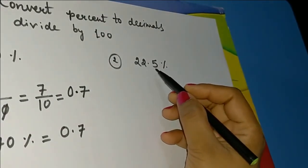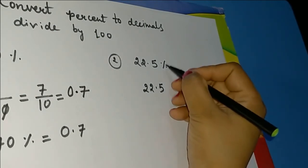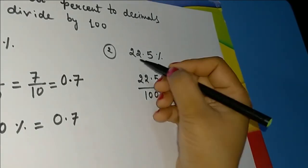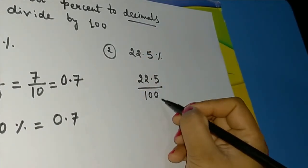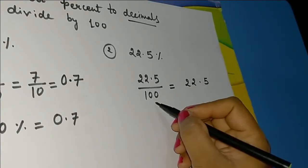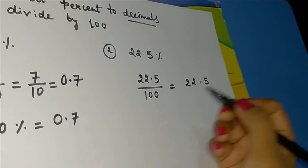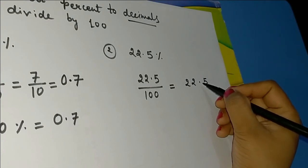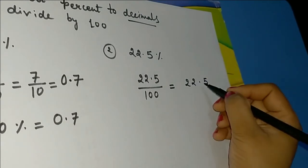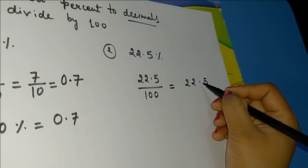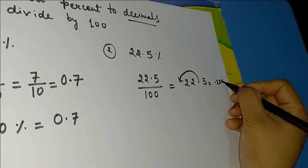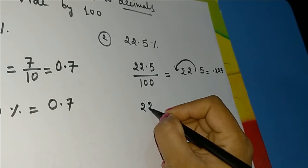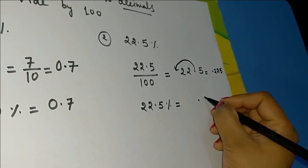Another example: 22.5 percent. Remove the percent sign and write 22.5/100. There are 2 zeros in the denominator, so we move the decimal point 2 digits to the left from its current position in 22.5. This gives us 0.225. Therefore, 22.5 percent equals 0.225.